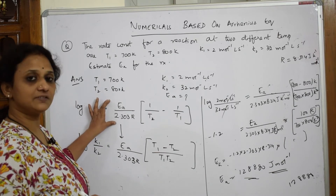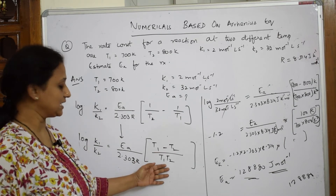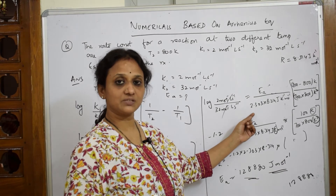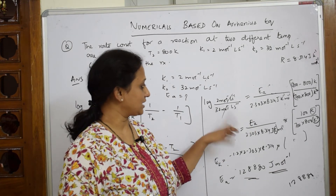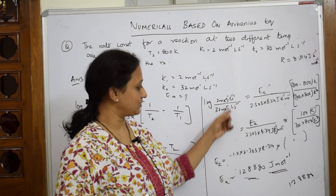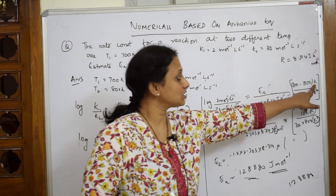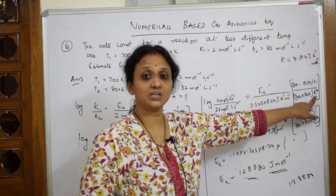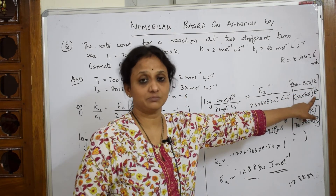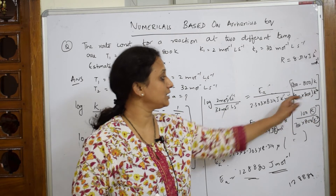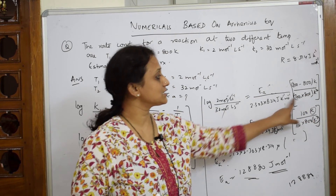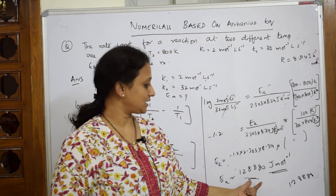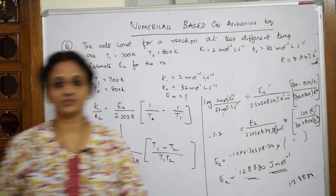I have written the Arrhenius equation, taken the LCM, substituted the values, and calculated. After cancelling common terms, remember most students make a mistake here — they don't take K squared. For both temperature terms you have to take it. Finally you get the answer in Joule per mol inverse.